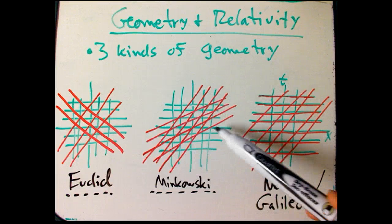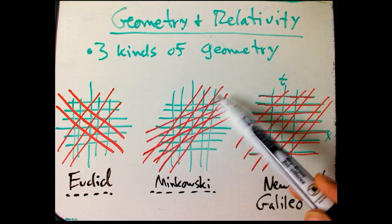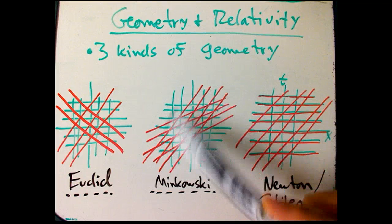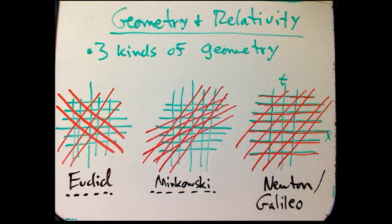Minkowski geometry here, the green is a legal grid, and the red is another legal grid. And so the kinds of transformations that are legal are the Lorentz transformations.